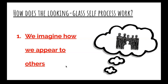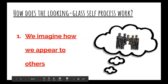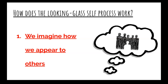This is actually a three-step process that sociologists have identified. The first step is we often imagine how we appear to others. Using my personal example — as a teacher, part of my self-image is that I'm a teacher, and I'm always trying to figure out how I appear to my students. I might picture myself up in front of the classroom and think about how I'm appearing to them.